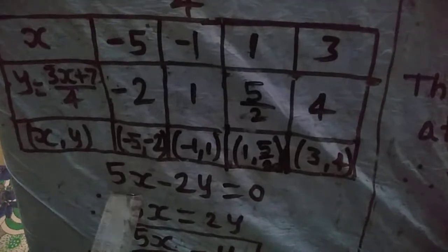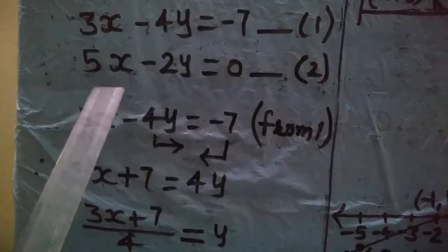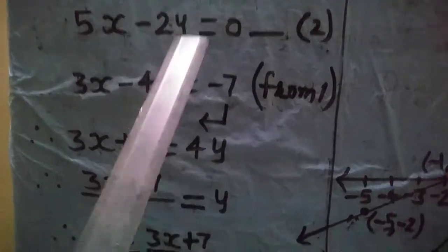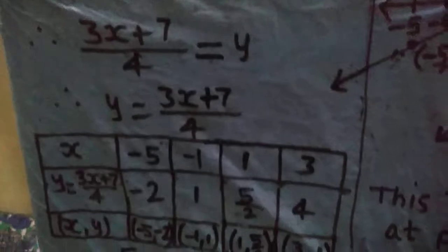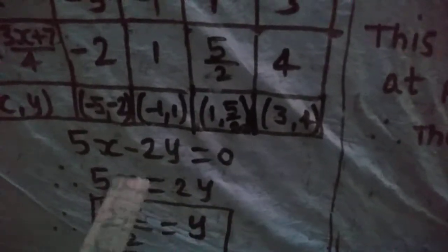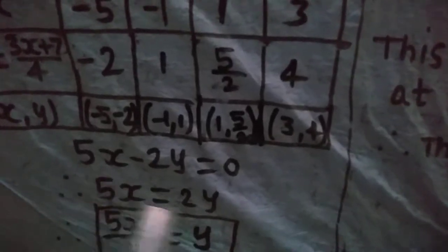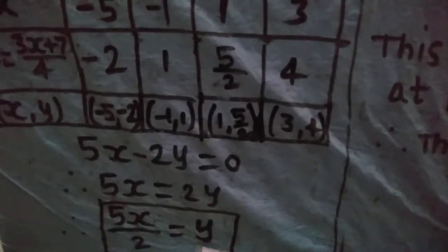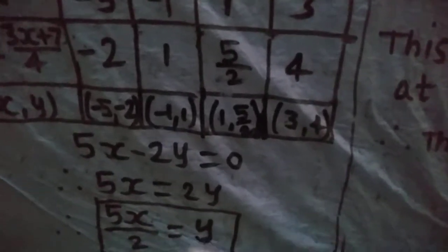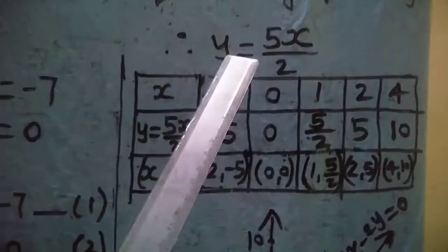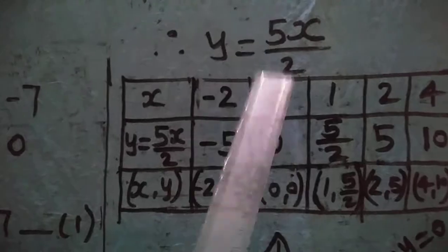Now for the second linear equation, 5x - 2y = 0. We convert this equation into the form of variable y. Transferring -2y to the right-hand side gives 5x = 2y, so y = 5x / 2.